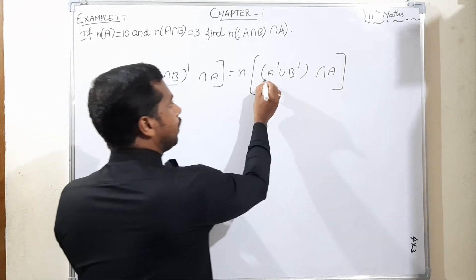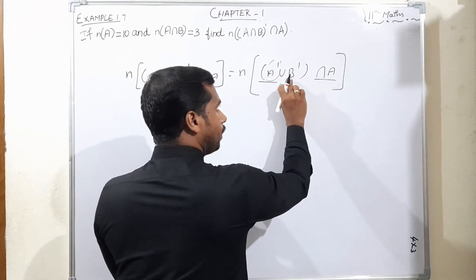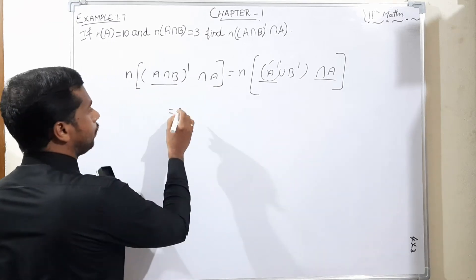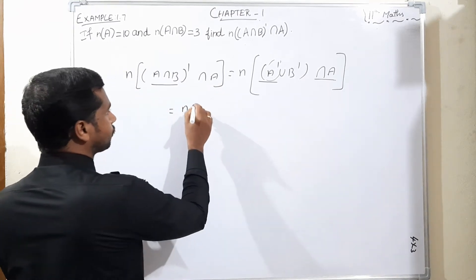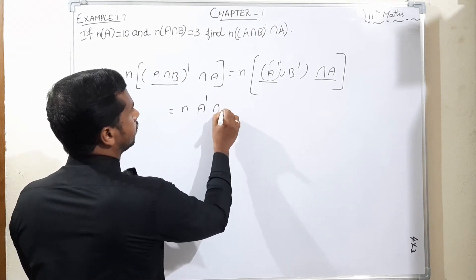One by one, A' intersection A is the null set. It's also compared. Then B' intersection A. The number of A' intersection A first, then what is the condition?